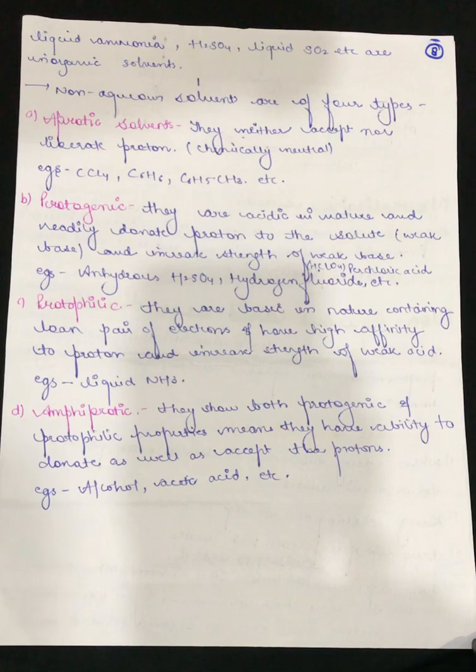Let's begin. Our aprotic solvents neither accept nor liberate protons. Chemically they will be neutral in nature. For example, carbon tetrachloride, benzene, toluene etc.